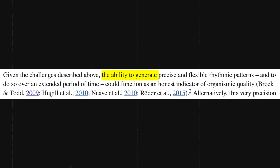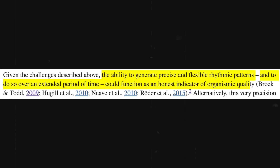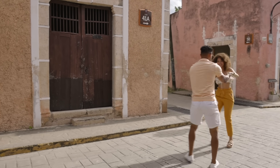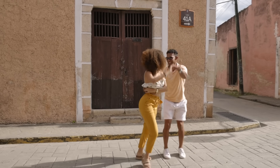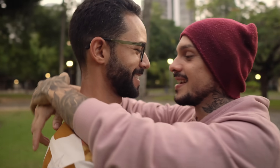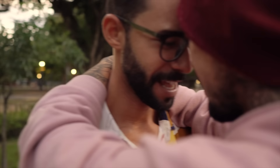One potential theory for climax is based on this idea of entrainment — your body's ability to regulate pulse and balance. The ability to generate precise and flexible rhythmic patterns and to do so over an extended period of time could function as an honest indicator of organismic quality. So not to music theory-splain sex more than I already have, but this is potentially a reason why music can be good to have sex to: because both people can entrain to the music, and then also potentially entrain to each other. Very wholesome. Rhythm makes you hot.